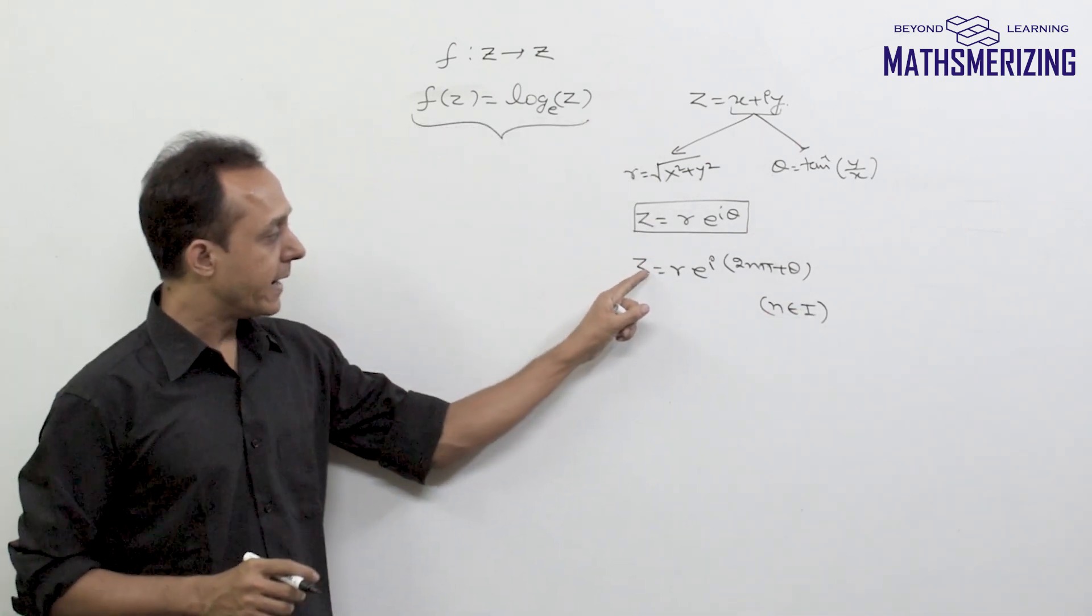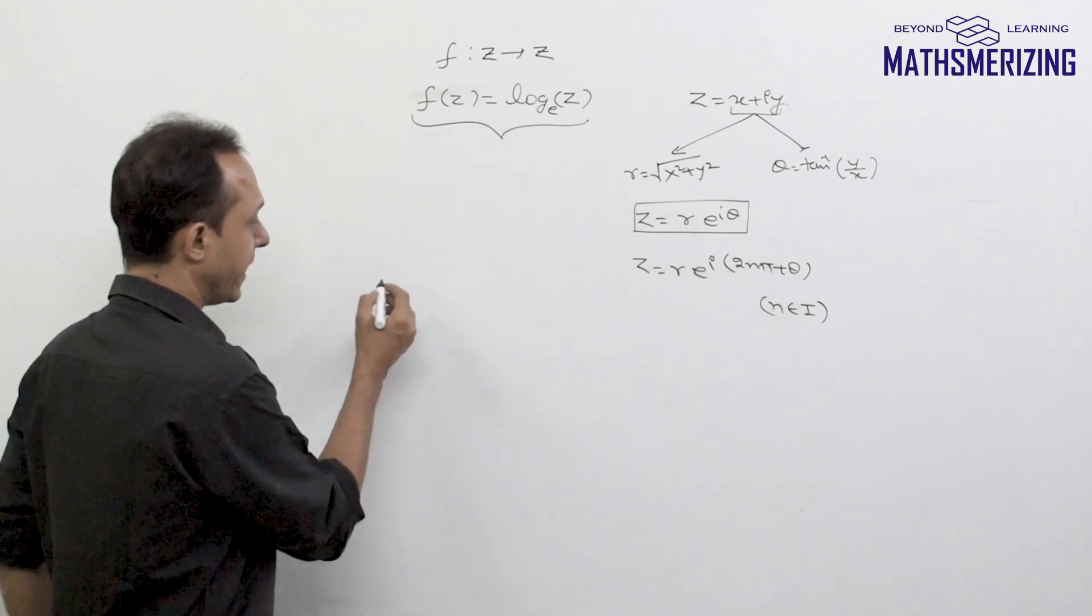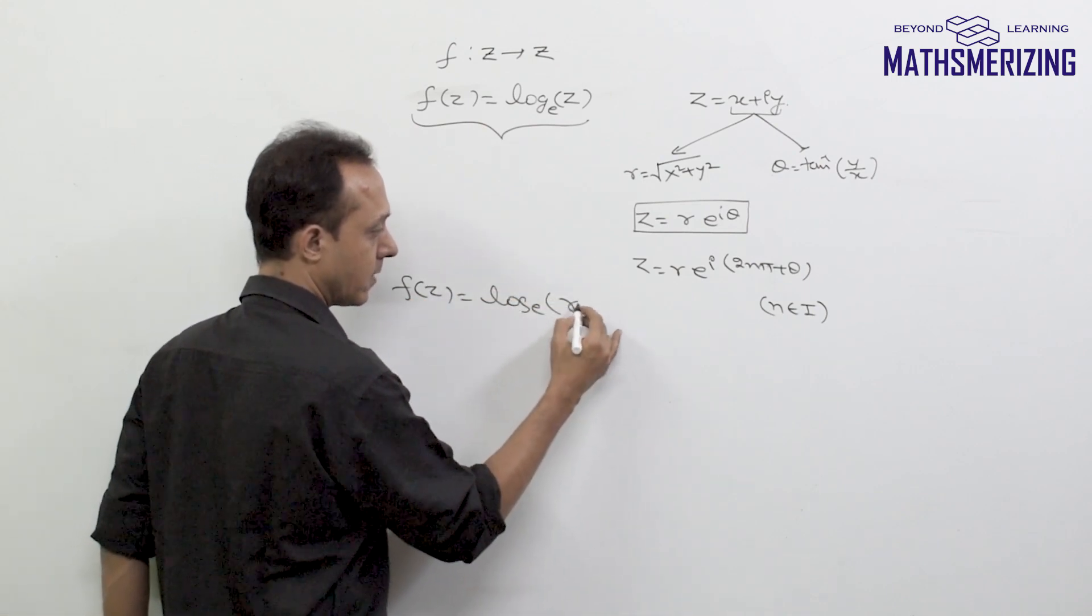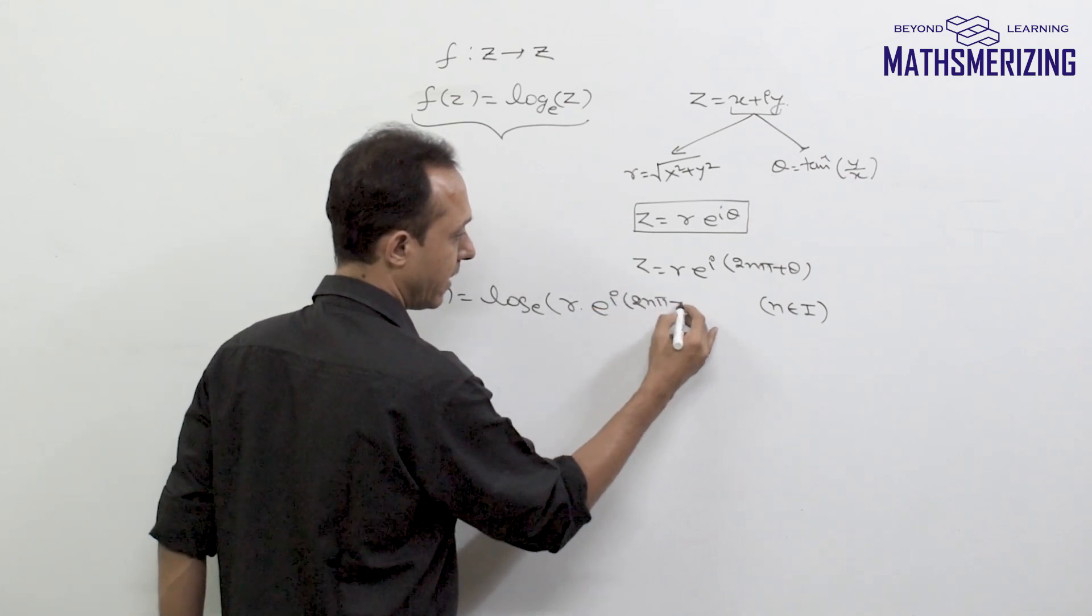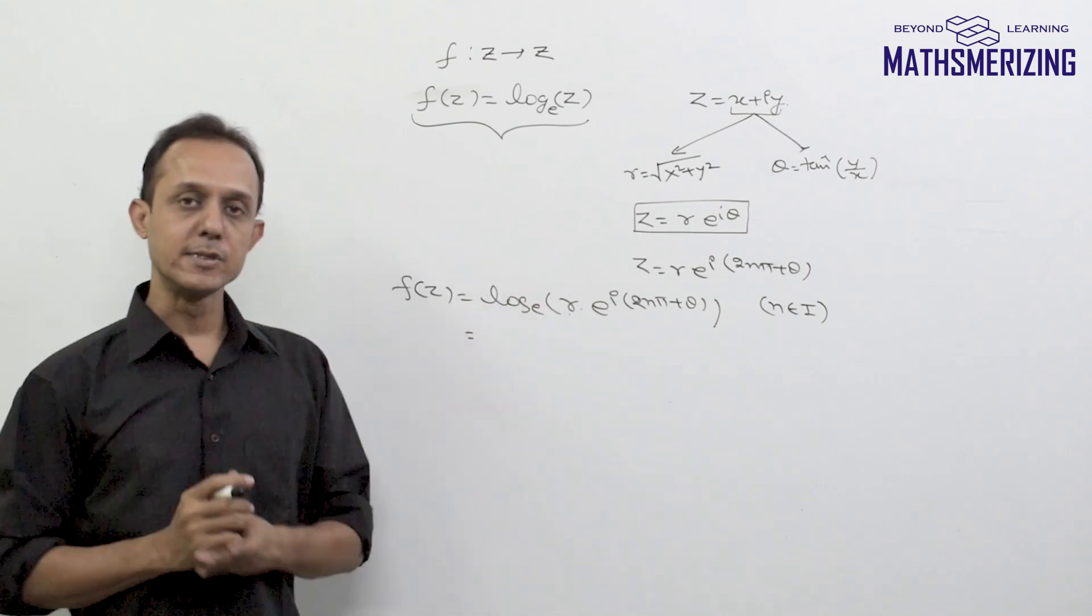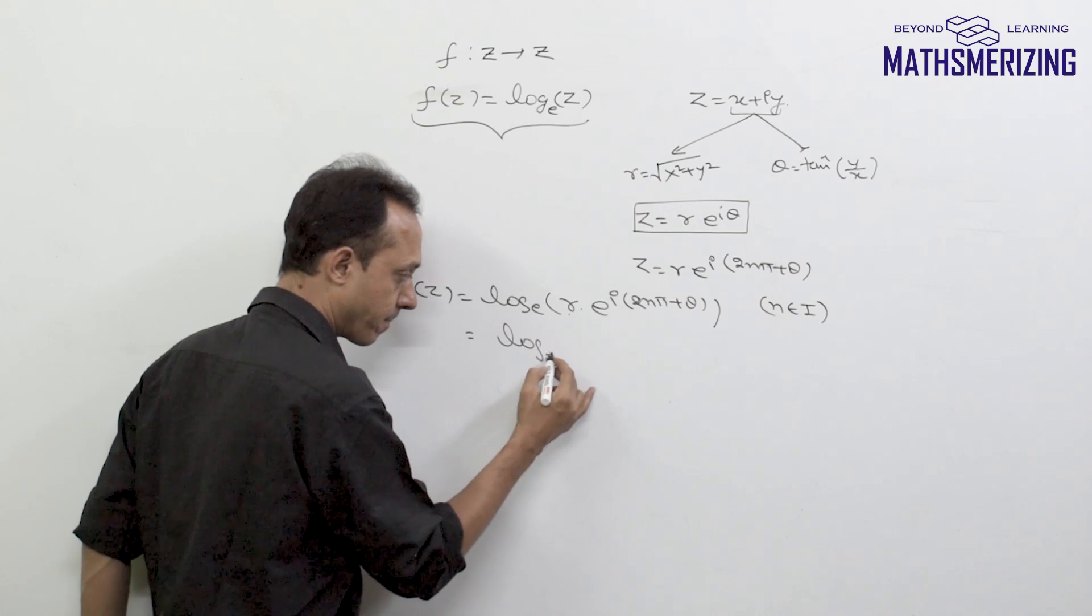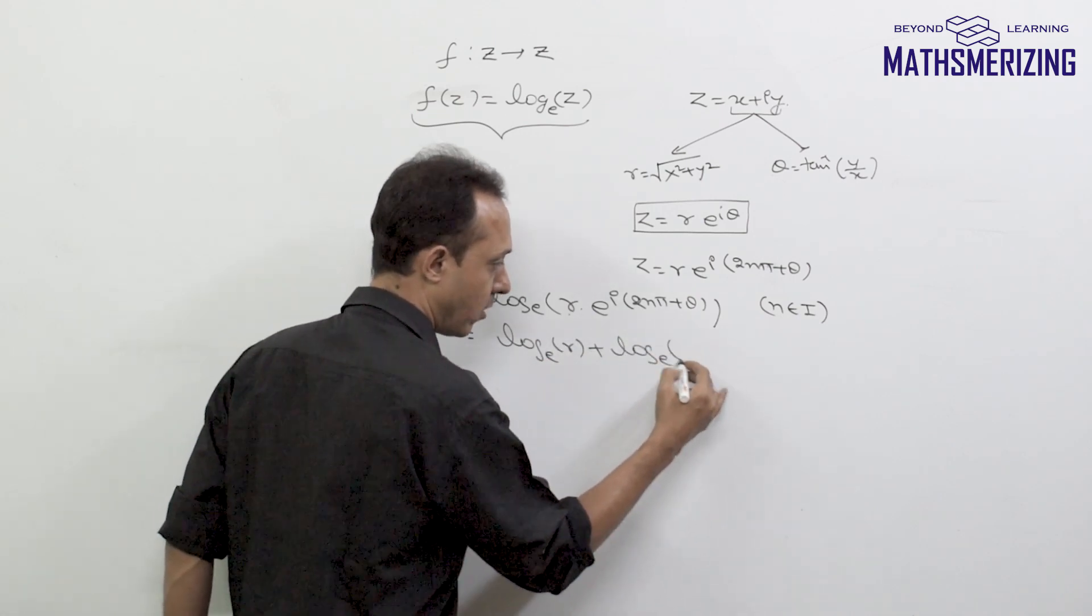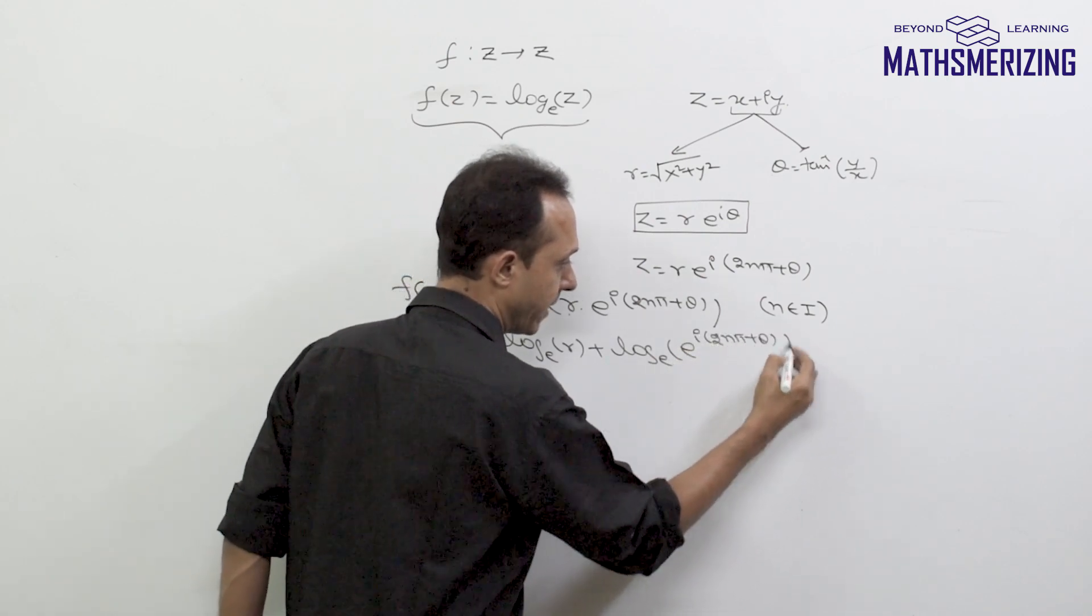So if we'll write z as r into e to the power i*(2n*pi + theta), I can write this function f(z) as log r into e to the power i*(2n*pi + theta). Now log m into n, it is log m plus log n. So I'll simply write it as log r and then log e to the power i*(2n*pi + theta).